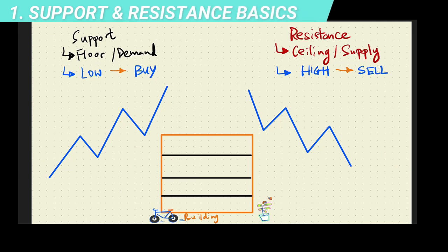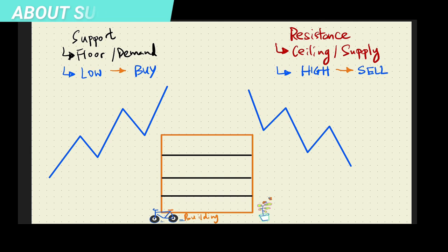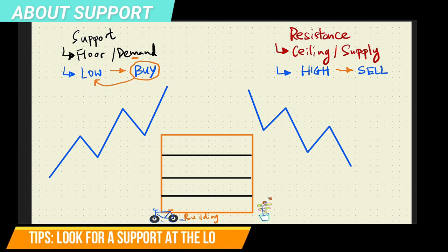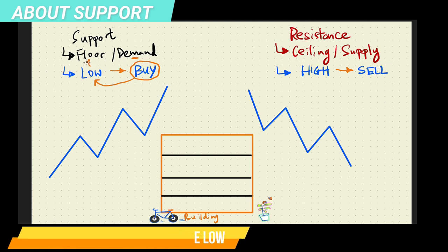Let's take a look at the simplest way to understand support and resistance. On the left side I've written down what is support. Support is a zone of demand. Demand means that people are looking to buy. People are looking to buy when it is at a low. Therefore, support is likely to be a low point — it's likely to be a floor.